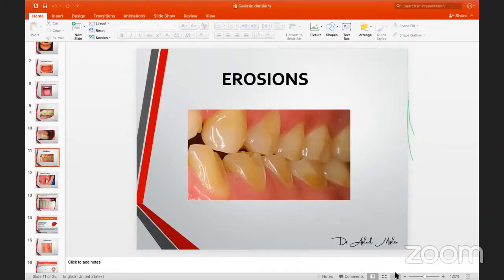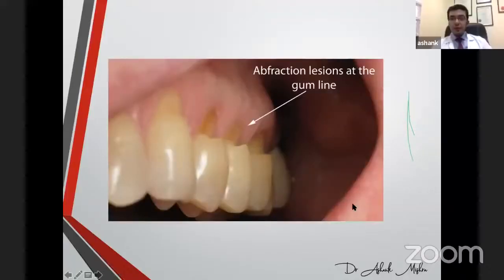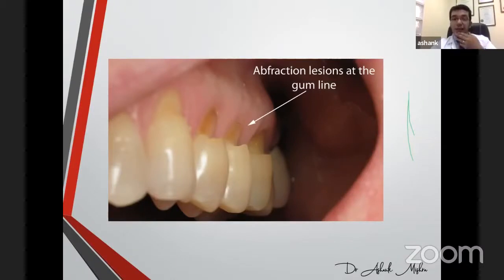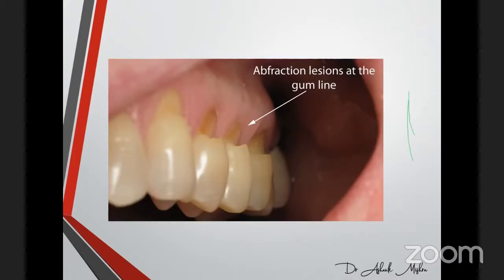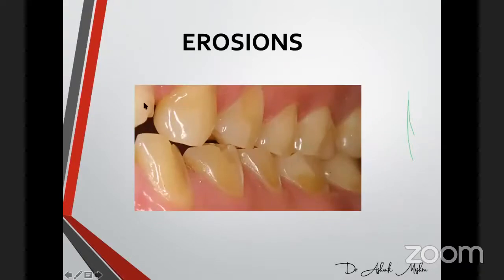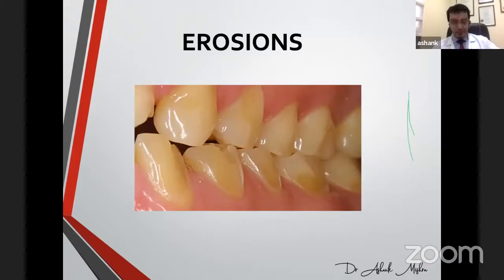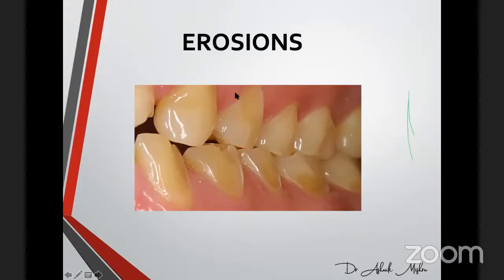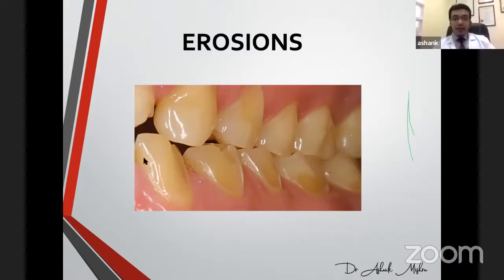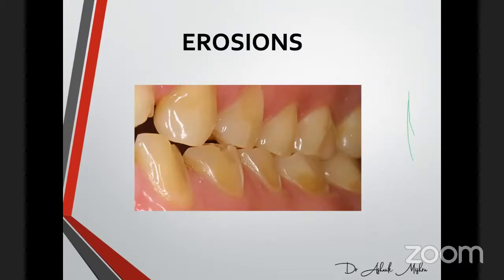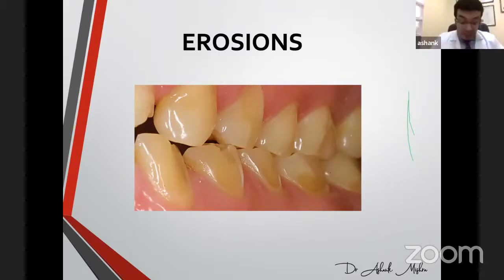With a lot of carbonated drinks and citrus food, enamel wears off and you get sensitivity. Erosion can appear on the inside surface of teeth and is sometimes not visible externally. This is what erosion means — enamel loss due to acidic foods and drinks.